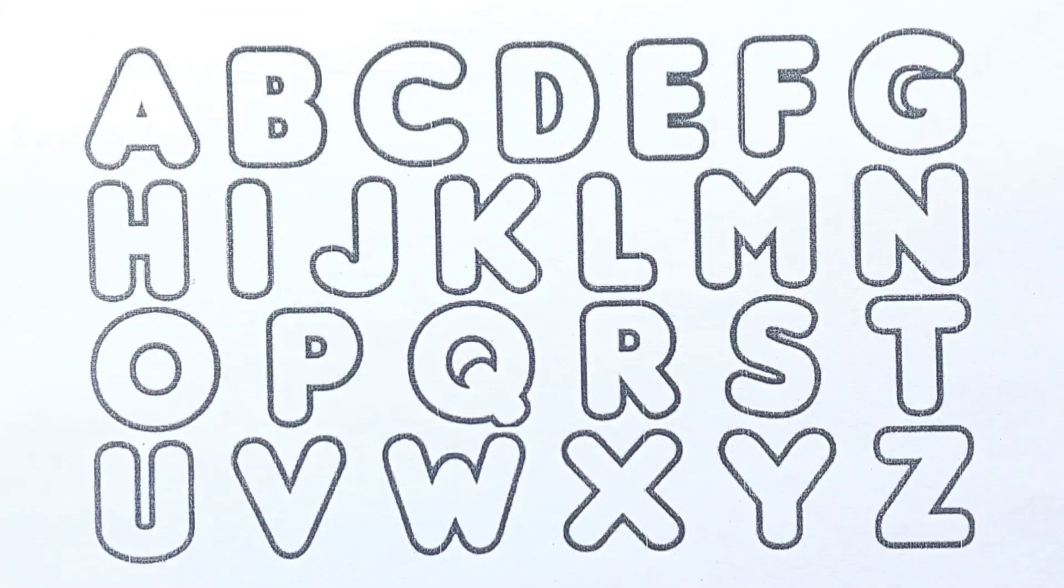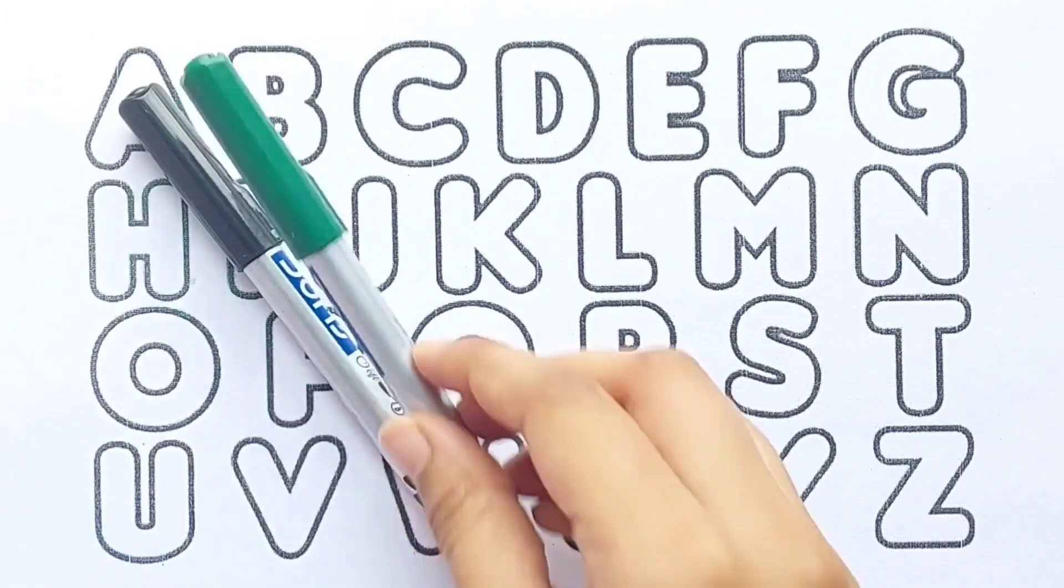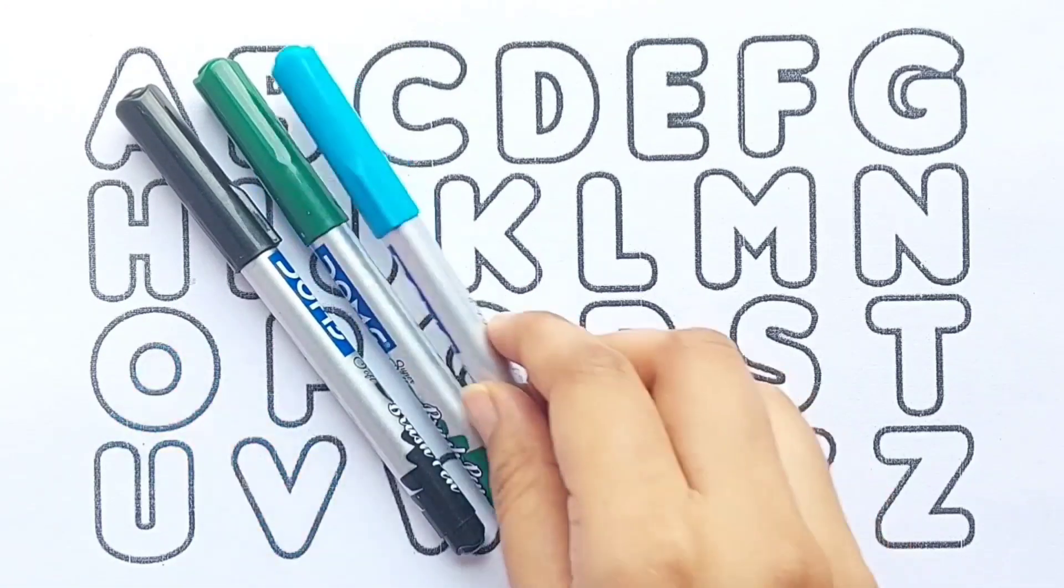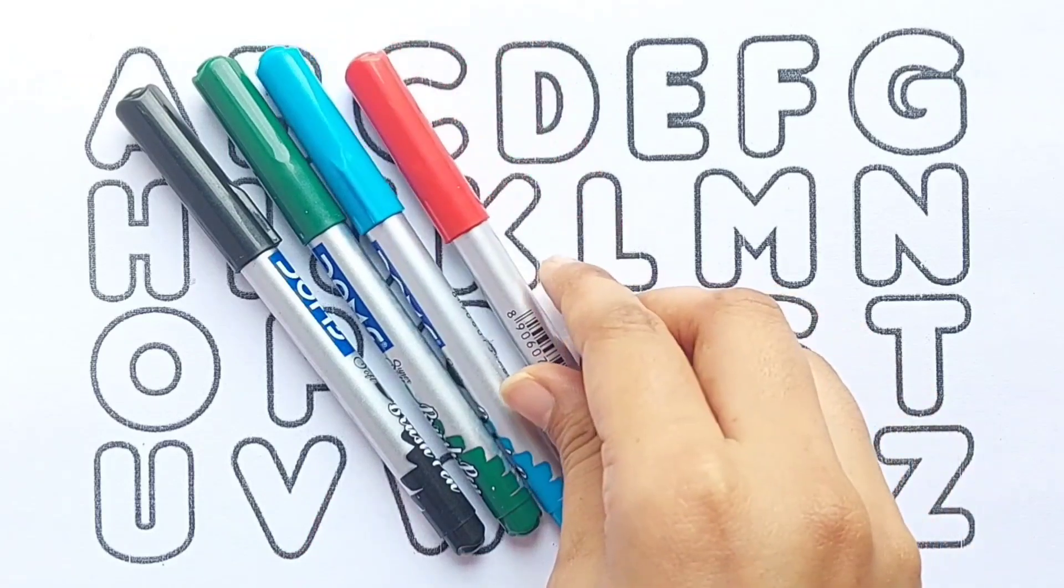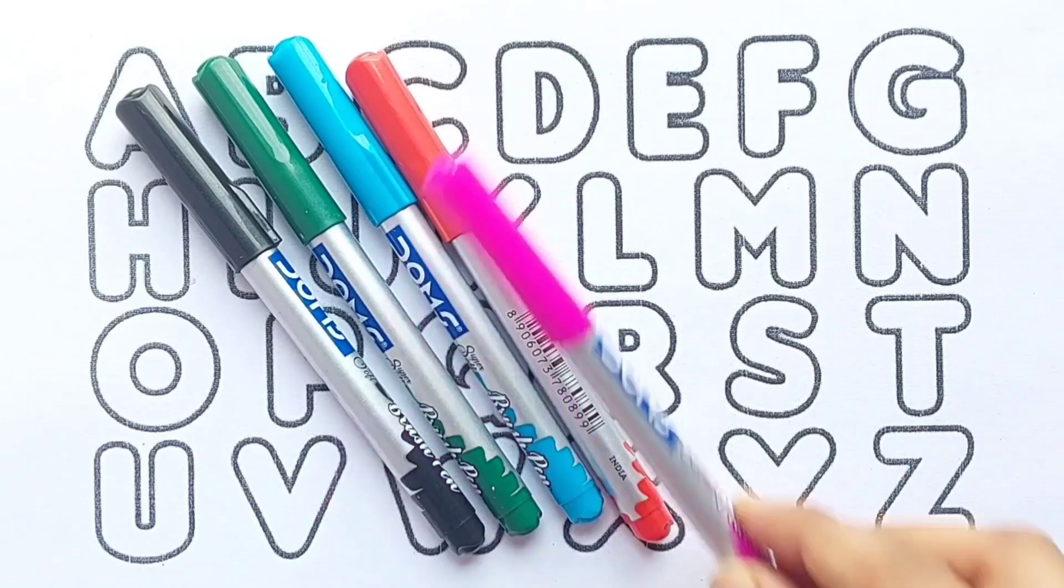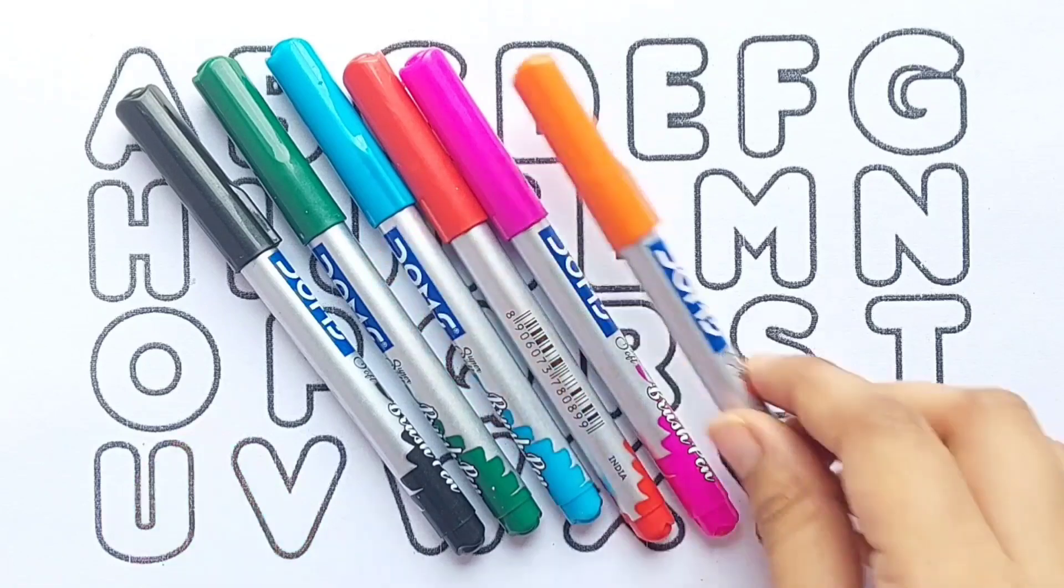Hello kids, let's learn ABC and colors. Black color, green color, sky blue color, red color, pink color, orange